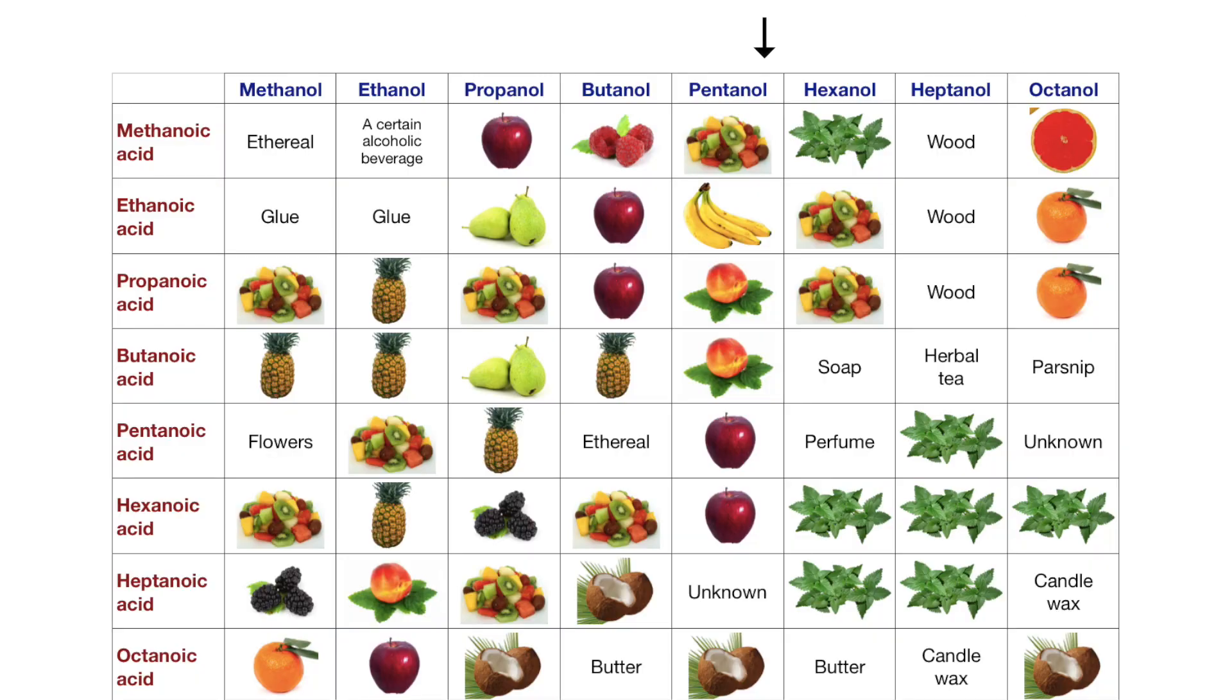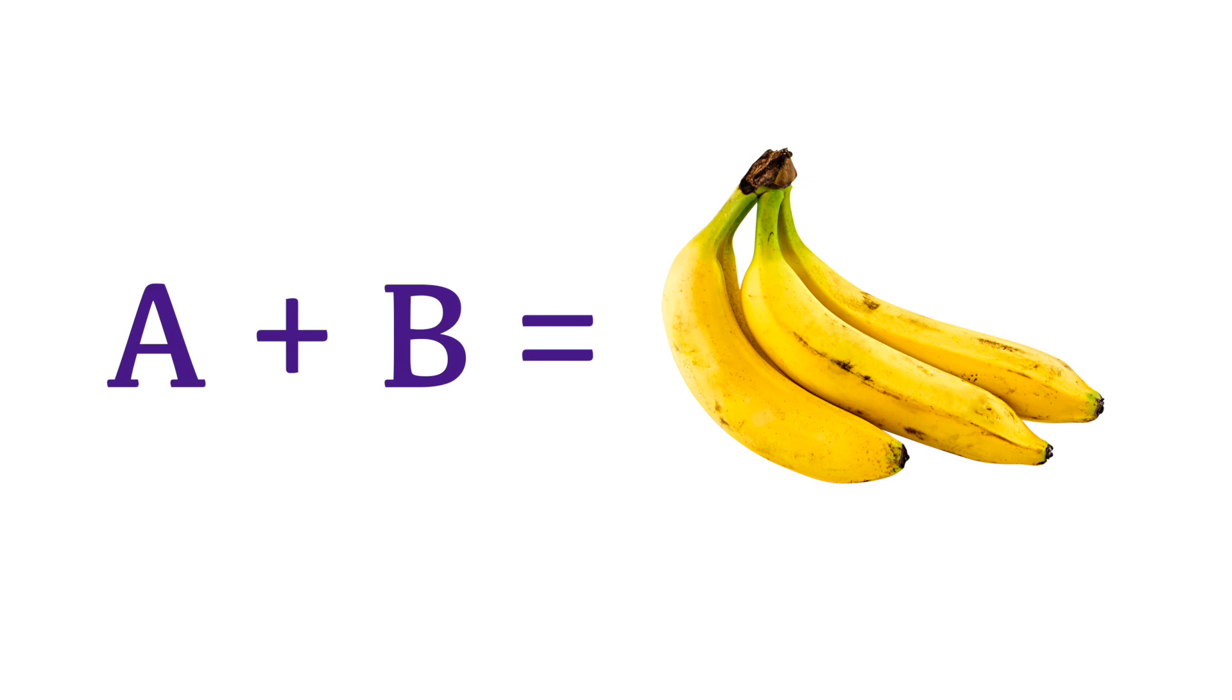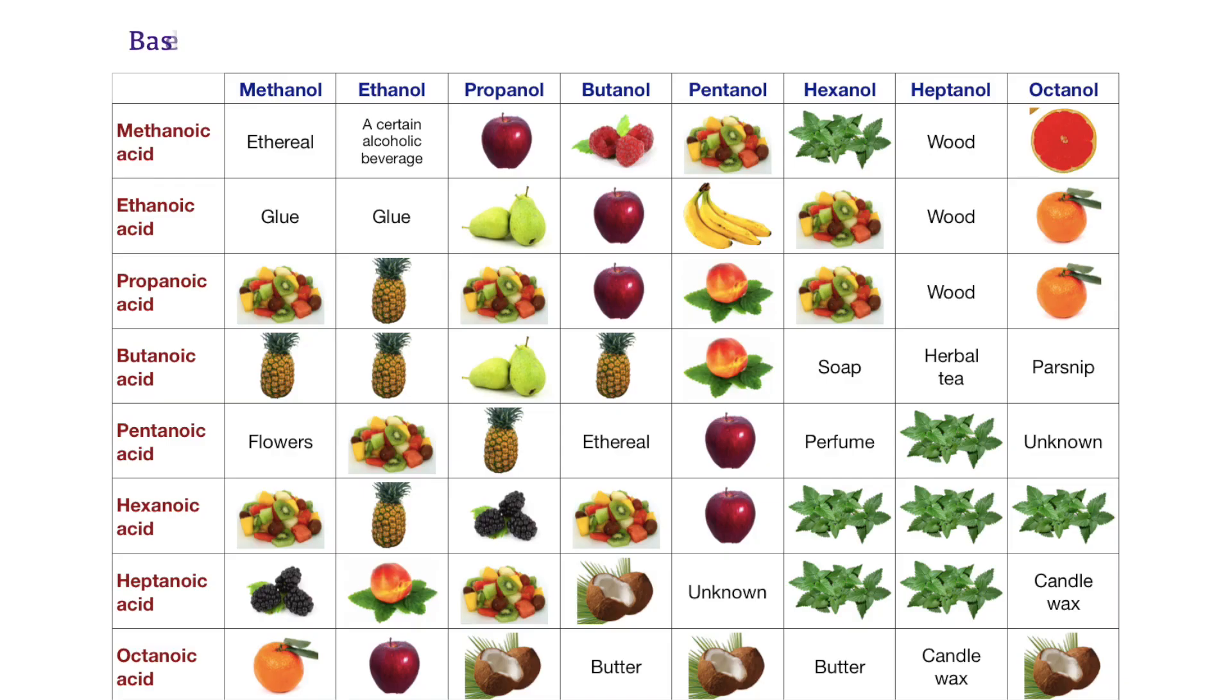Along the top we have a range of alcohols, with the simplest ones on the left. Down the side we have some carboxylic acids, with the simplest at the top. Combining each alcohol with each carboxylic acid produces... Fruit? What's this all about? A more traditional chart would give the names of the esters produced by each combination of alcohol and acid. This chart goes one step further by showing the smell of each ester.